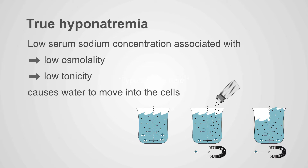True hyponatremia is when you have a low serum sodium concentration along with low osmolality and low tonicity. This causes water to move into the cells. Sodium is osmotically active, so you get a relatively higher concentration inside the cells and therefore water movement into the cells.